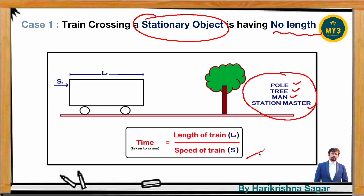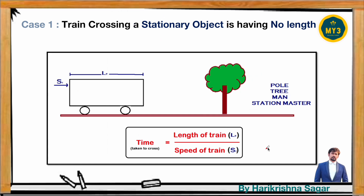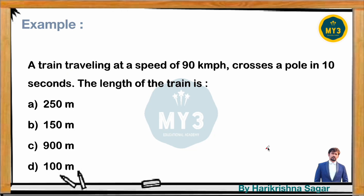So the time taken is given as length of the train divided by speed of the train. While solving, they will give any two quantities and you find the other. Make sure you use the conversion: 1 kilometer per hour equals 5/18 meter per second. Now let's look at a simple question on the screen — a train traveling at 90 km/h crosses a pole in 10 seconds. What is the length of the train?